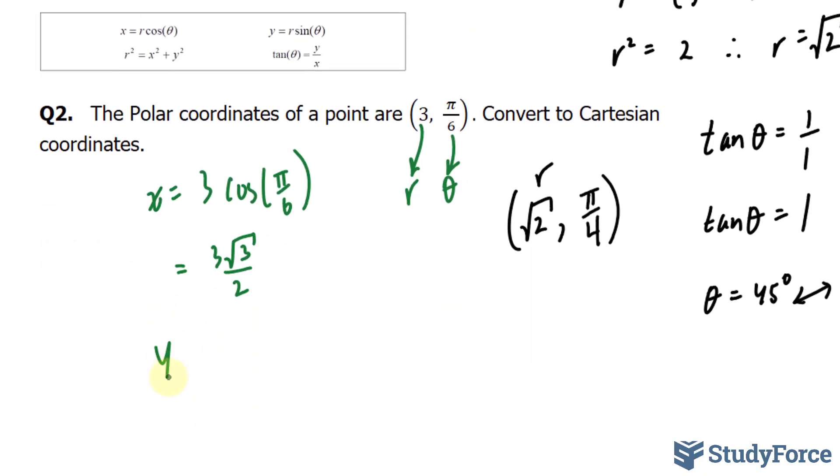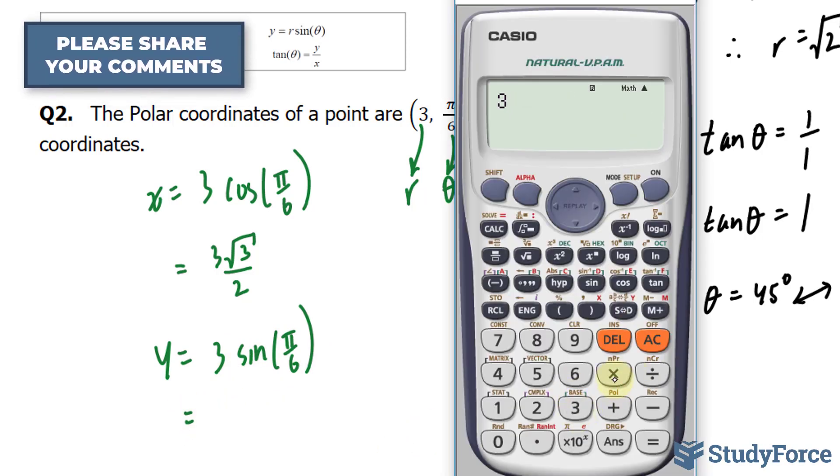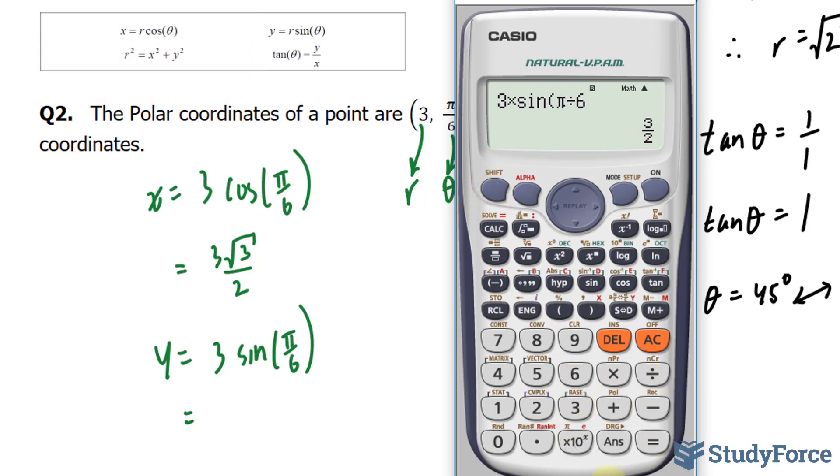And my y is equal to my radius of 3, sine at pi over 6. Using my calculator again, 3 times sine pi over 6 gives me 3 over 2.